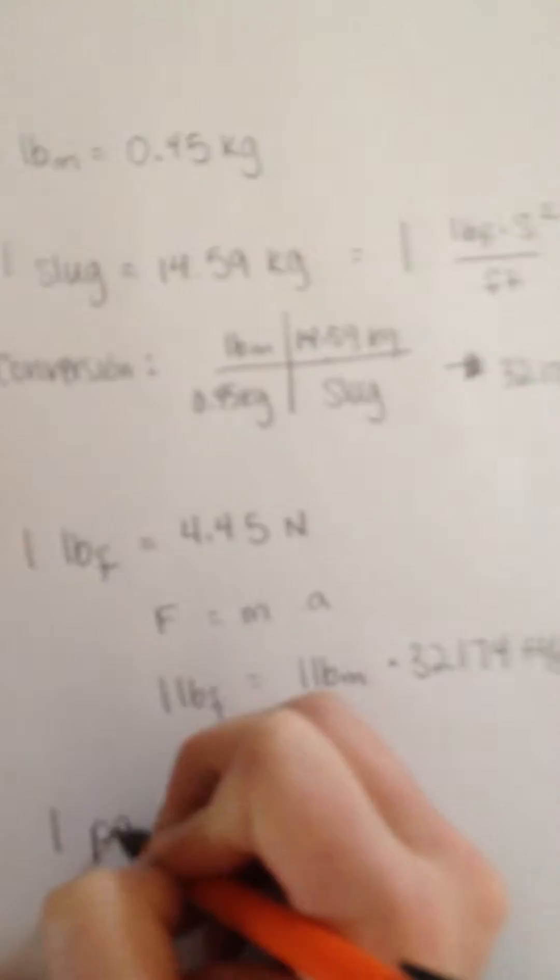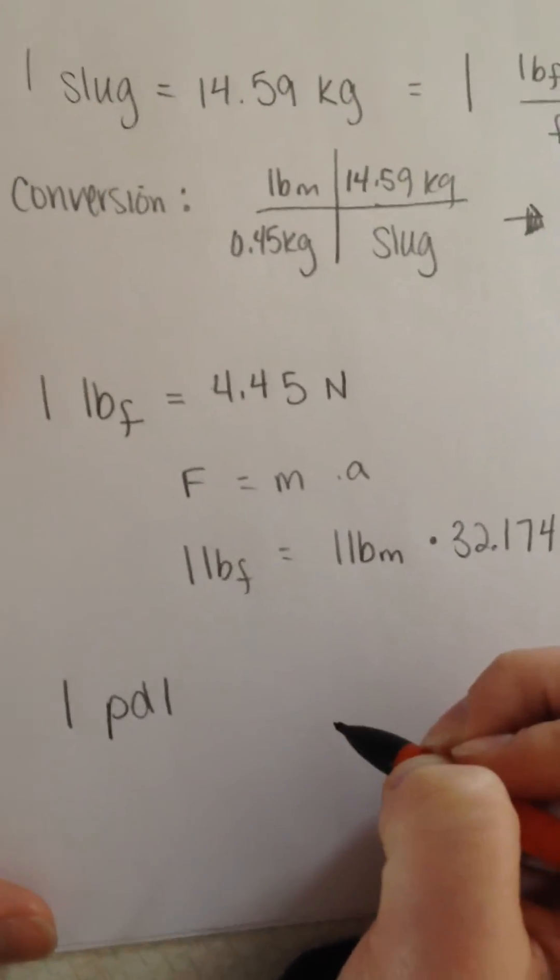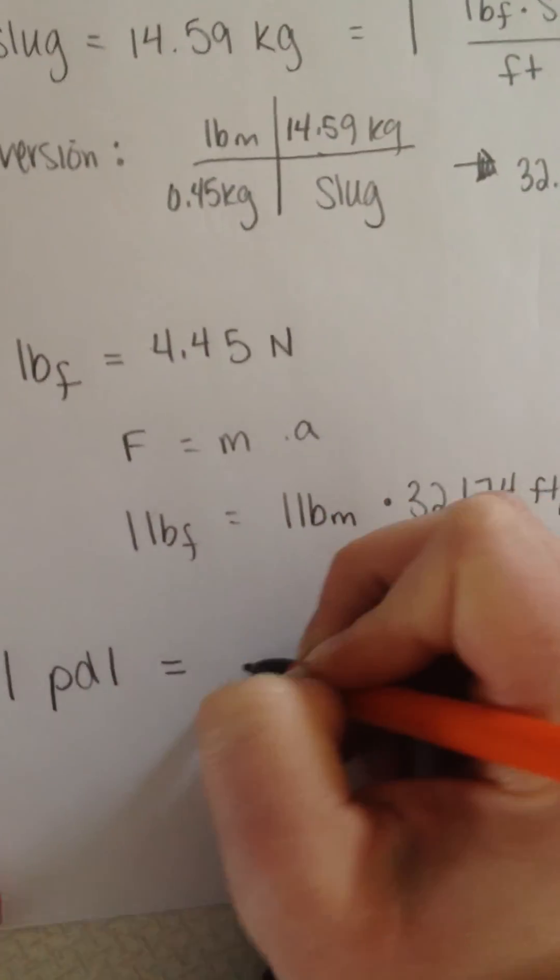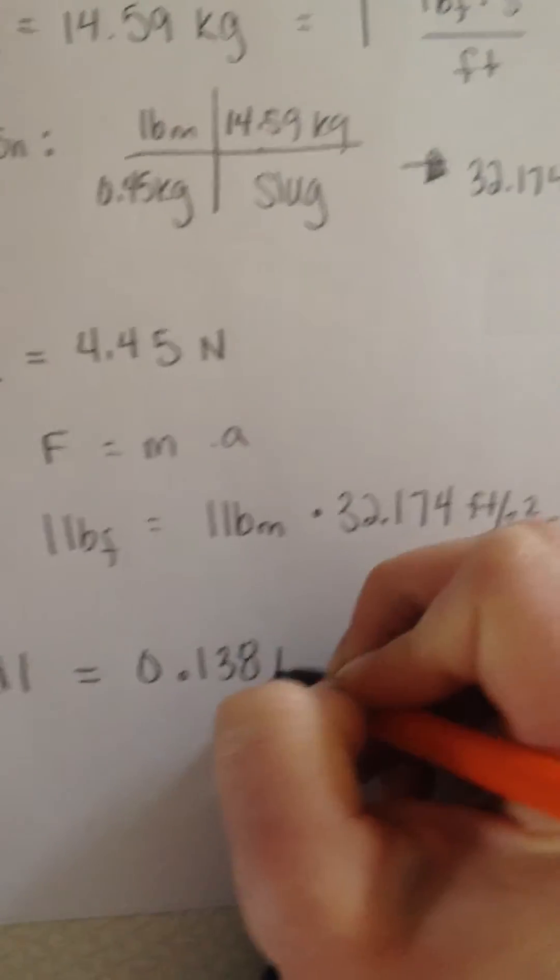The final unit we're going to talk about today is the poundal, which is also a unit of force. It tells you the force necessary to accelerate one pound mass to one foot per second squared, and that is equivalent to 0.138 newtons.